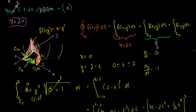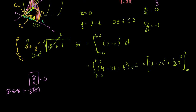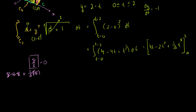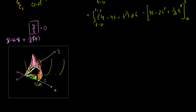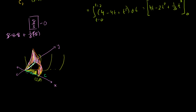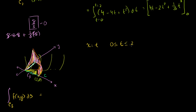Now we have our last wall to figure out. We're going along contour C3. For this parametrization, since we're along the x-axis, we say x = t for t between 0 and 2, and y = 0 the whole time. That's a pretty straightforward parametrization.